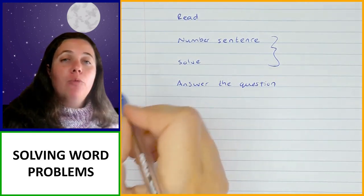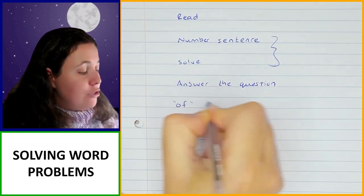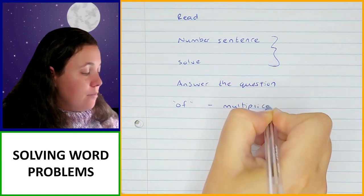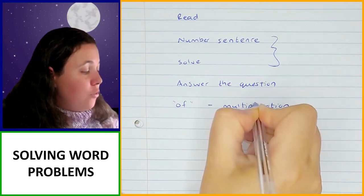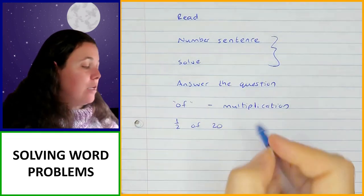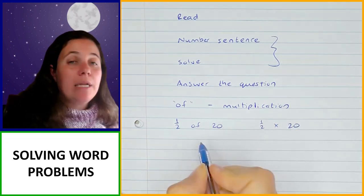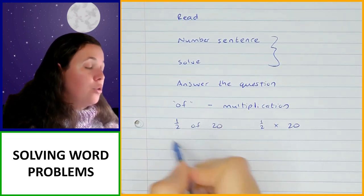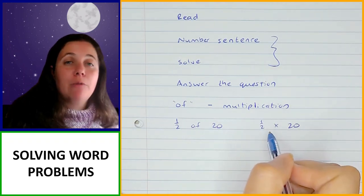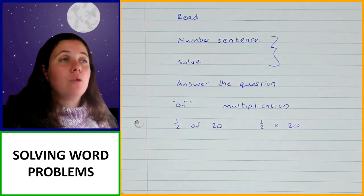Something else that's going to be helpful when we're doing word problems, particularly with fractions, is you need to note that the word 'of' generally means multiplication. So if you are told that there's half of 20 for something, that means half times 20. When you're converting the word form into your number sentence, the word 'of' is generally going to mean multiplication — and that's particularly going to help you with fraction word problems.